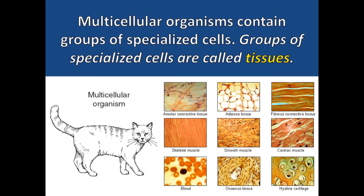Multicellular organisms contain groups of specialized cells. Groups of specialized cells are called tissues. Blood, adipose or fat tissue, and muscle tissue are all examples of tissues that you can find inside animals.